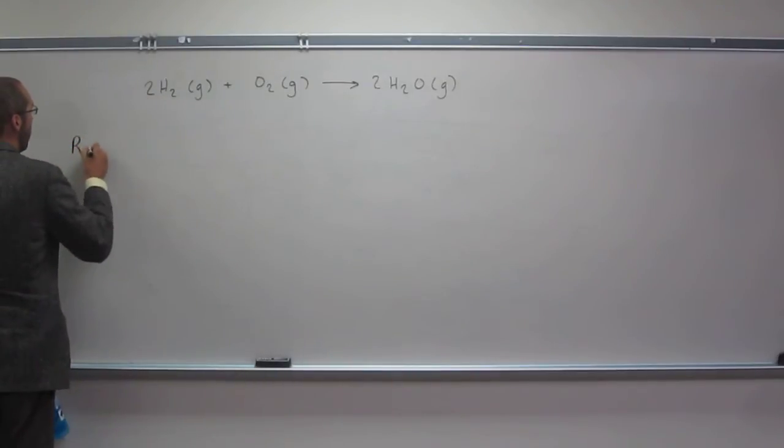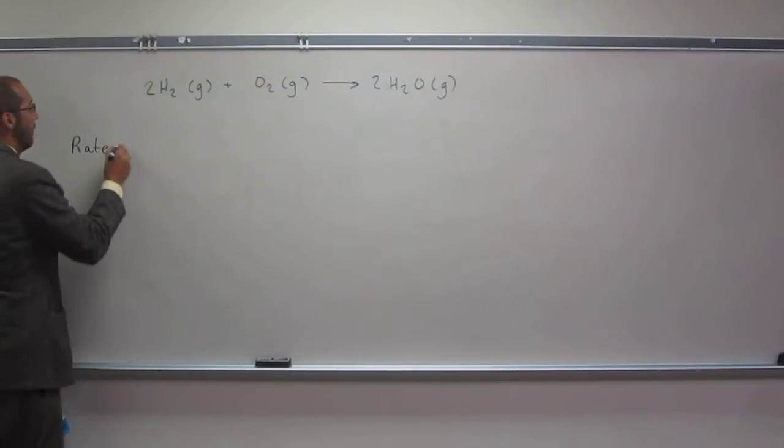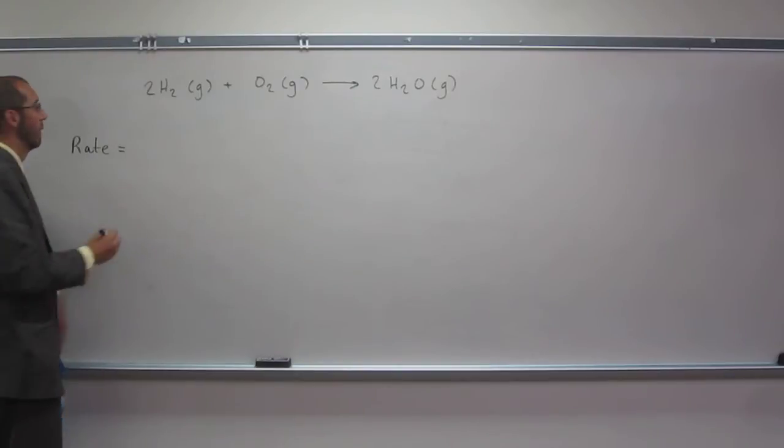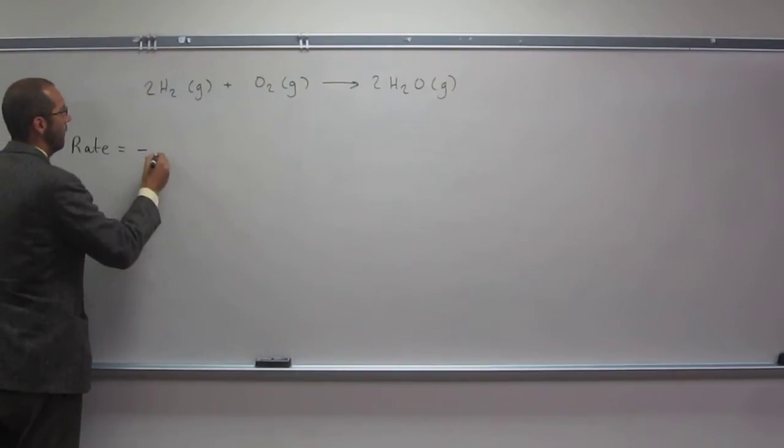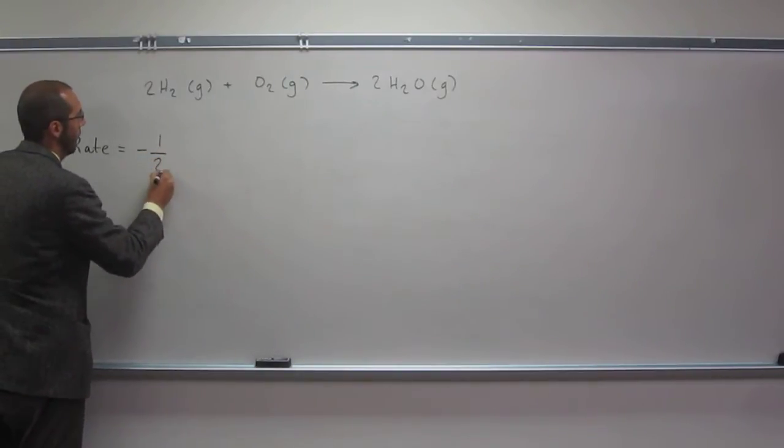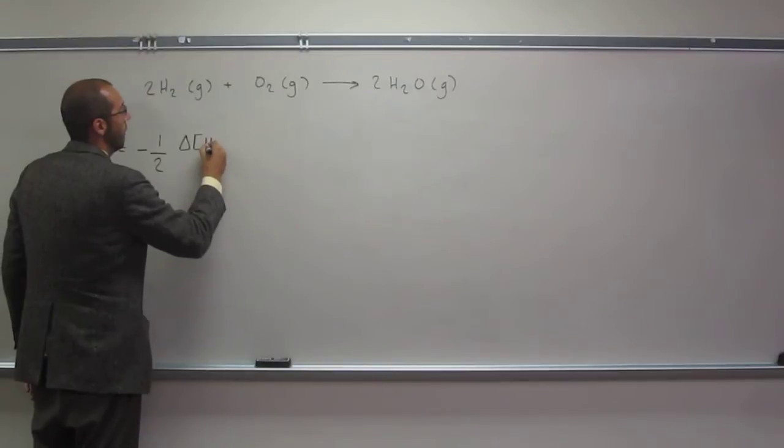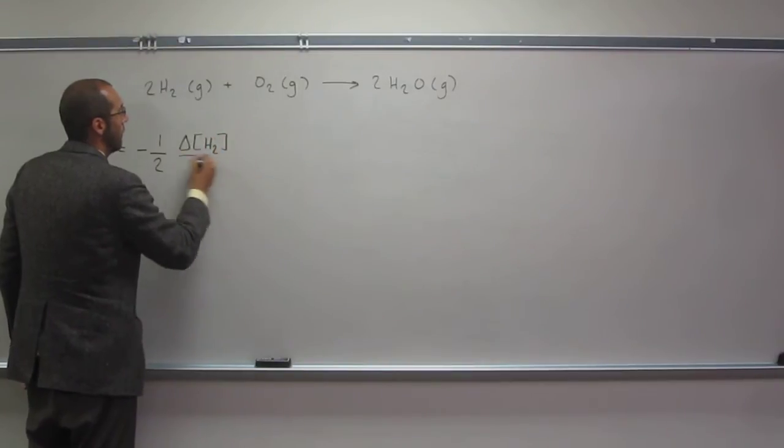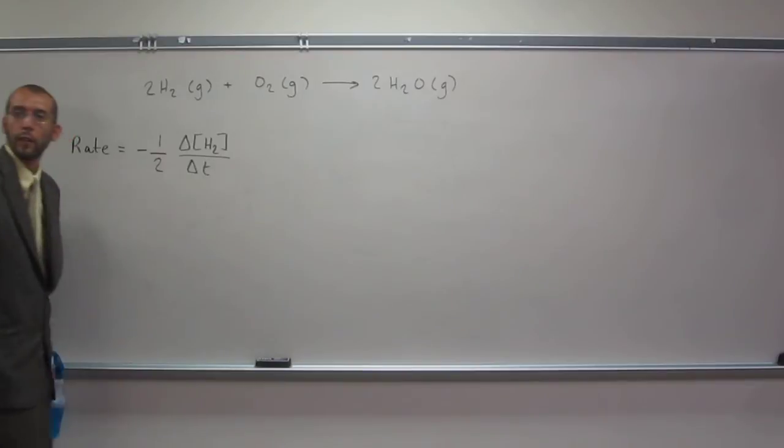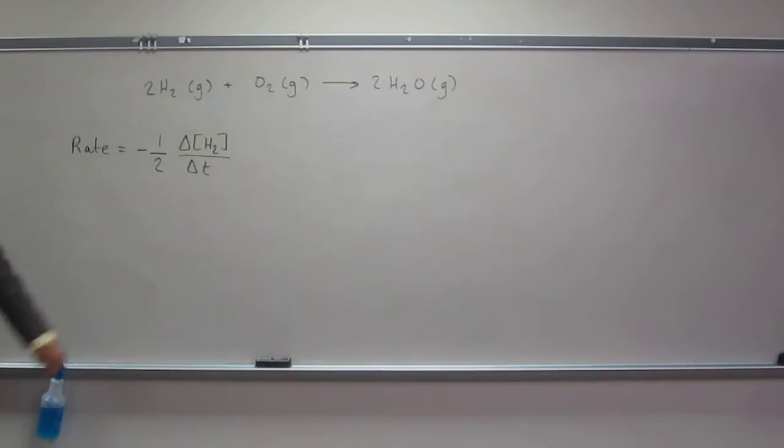Remember the rate, and so in this case, with hydrogen, can you guys help me out? What is it going to be? Negative. One-half. Very good. Times what? The change of the concentration of H2 divided by delta T. Everybody okay with doing something like that?